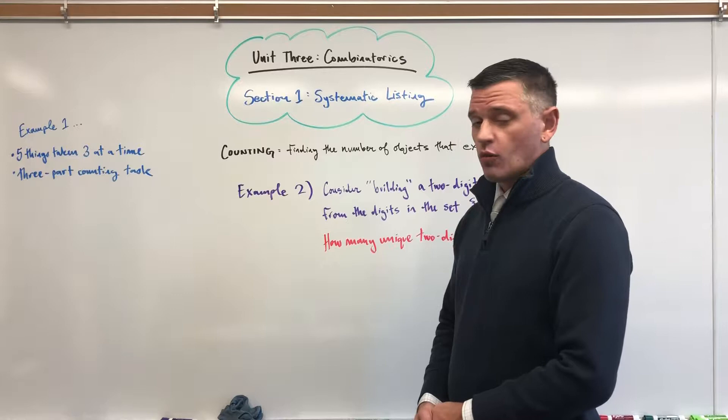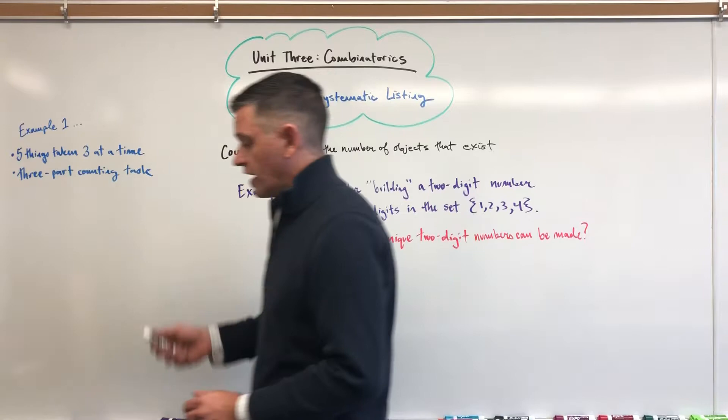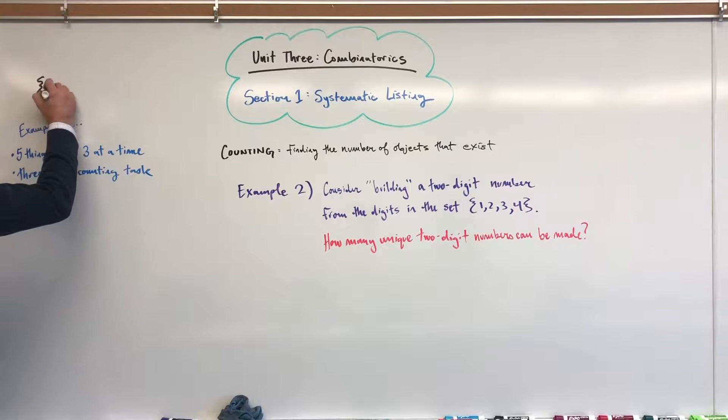We did it picking one class, shockingly there were five ways. We did it choosing two. We had five objects, we chose two at a time, we found ten unique combinations. And when I left you I asked you to try to make a list for three. So let's try to do that now. Remember that the set that we're drawing from could be abbreviated down to ABCDE.